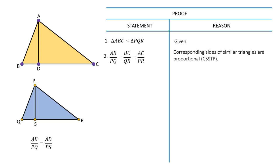Now angle ADB is equal to angle PSQ, which is 90 degrees, because AD and PS are altitudes. In triangle ADB and PSQ, angle B is equal to angle Q because triangle ABC is similar to triangle PQR.